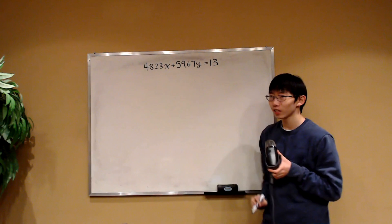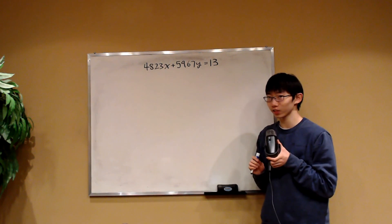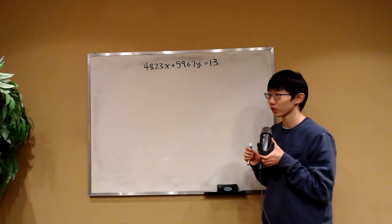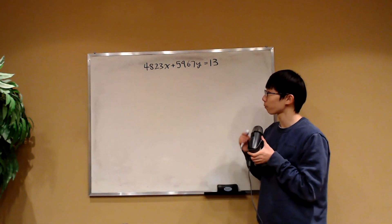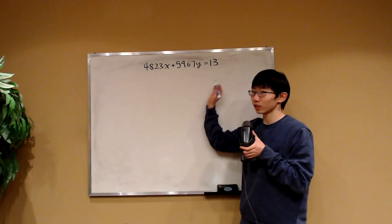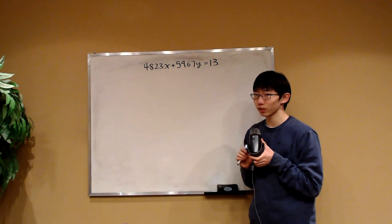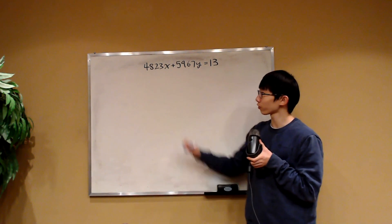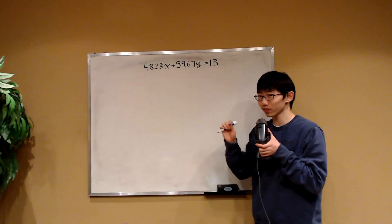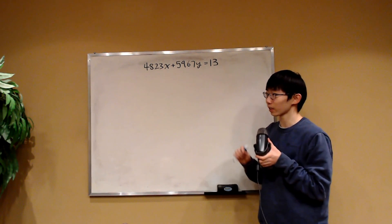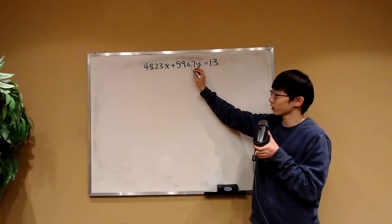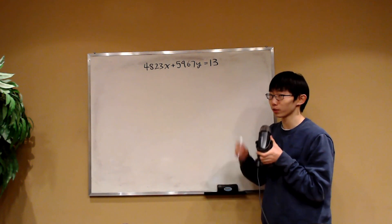Basically, there's a linear combination and it's a Diophantine equation in which we are only interested in integer solutions. So we want to find a pair of integers x and y such that this equation is satisfied. You might be thinking: why don't we just plug in values for x and then solve for y? The thing is that most of the time you will not be finding an integer solution for y, because when you divide by 5,967, chances are you won't be getting an integer.